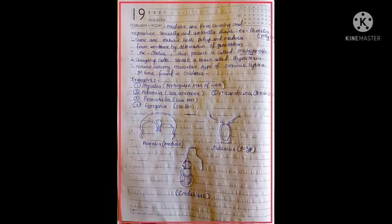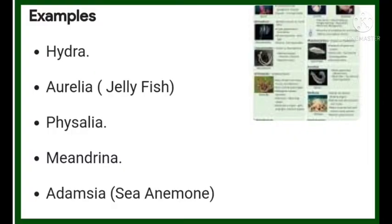When an organism has both polyp and medusa forms it is called dimorphic. Other examples include Physalia, which is called the Portuguese man-of-war; Adamsia, which is a sea animal; Pennatula; Gorgonia; and Meandrina, also known as brain coral. In the diagram here we see Hydra, Aurelia, Physalia, Meandrina, and Adamsia.